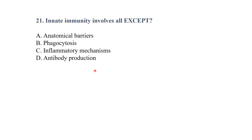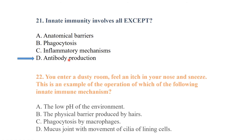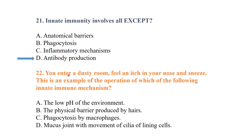Innate immunity involves all mechanisms except antibody production. Antibody production is part of adaptive immunity.